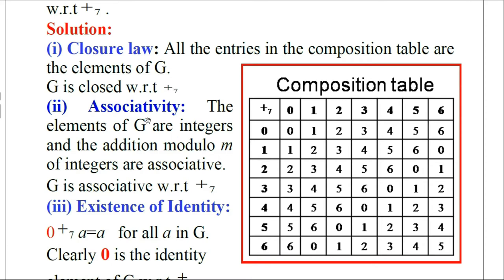The next axiom is associativity. The elements of G are non-negative integers from 0 to 6. The addition modulo M of integers is associative, as already proved in one of the theorems. Therefore, G is associative with respect to addition modulo 7.